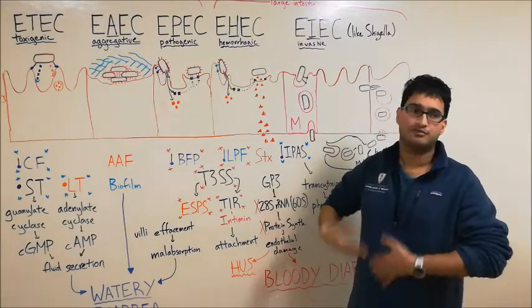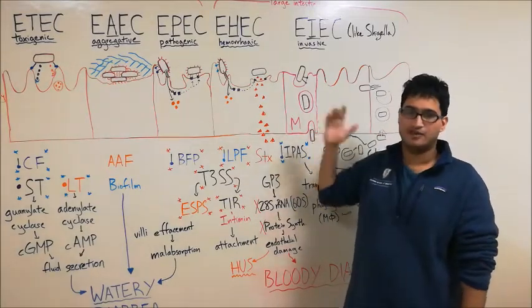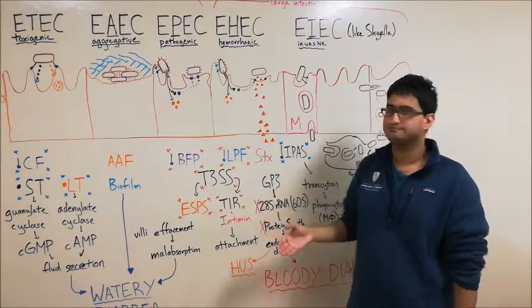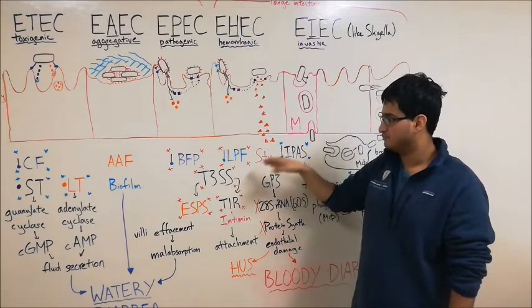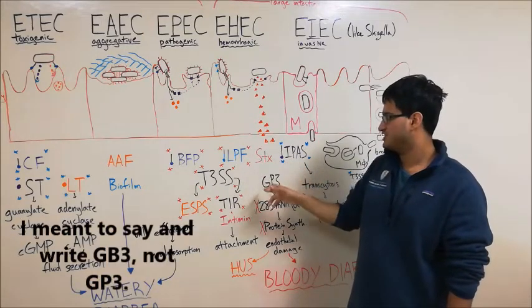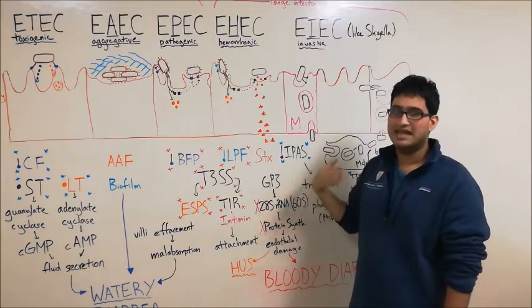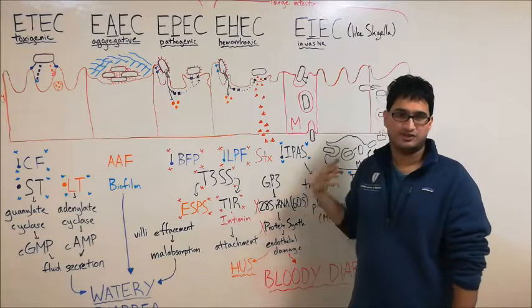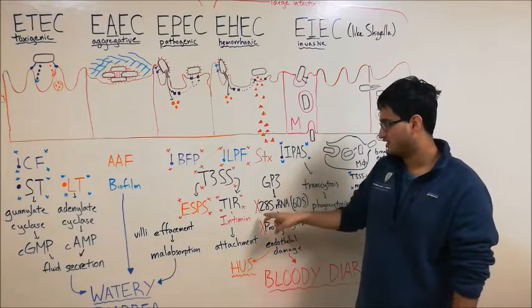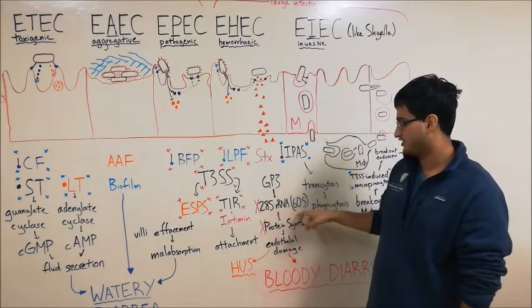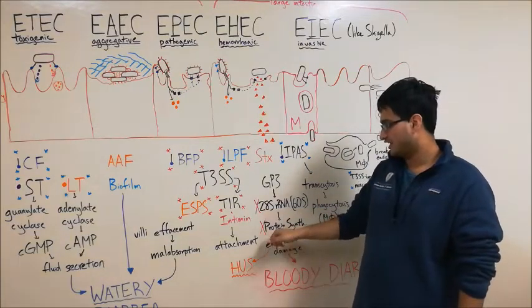The third and most important difference is the presence of Shiga toxin, which is what causes EHEC to be hemorrhagic and a bloody diarrhea, as opposed to a watery diarrhea. Shiga toxin is secreted by the bacteria. It's going to make its way through the enterocytes into the bloodstream through unknown mechanisms, and it's going to bind to the Gb3 molecule on endothelial cells. Shiga toxin is an AB toxin. When it binds to the Gb3, it will get endocytosed and taken up into the cell. Once the A subunit breaks out of that endosome, it's then going to cleave the 28S rRNA subunit of the 60S subunit of the eukaryotic ribosome. This is going to block protein synthesis and lead to endothelial damage.